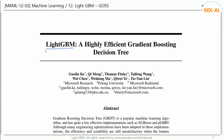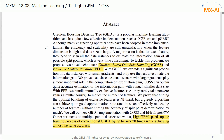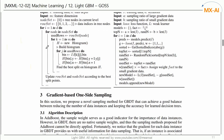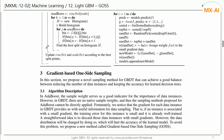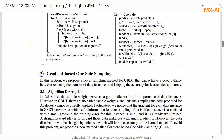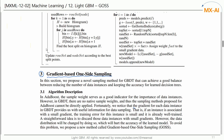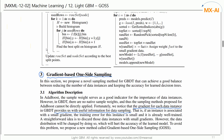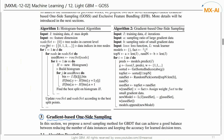Let's look at the LightGBM paper. Chapter 3 presents the gradient-based one-side sampling. The gradient for each data instance in GBDT provides useful information for data sampling. We can sample the data using the gradient, which is the first-order gradient. Algorithm 2 for GOSS is presented.